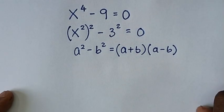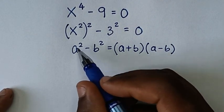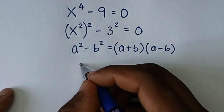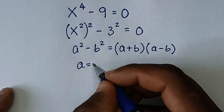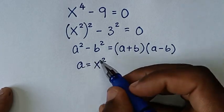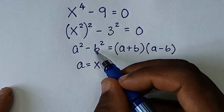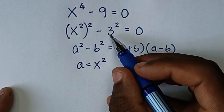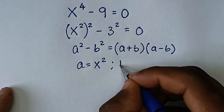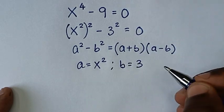When we compare a² with (x²)², then a is equal to x². And comparing b² with 3², then b is equal to 3.